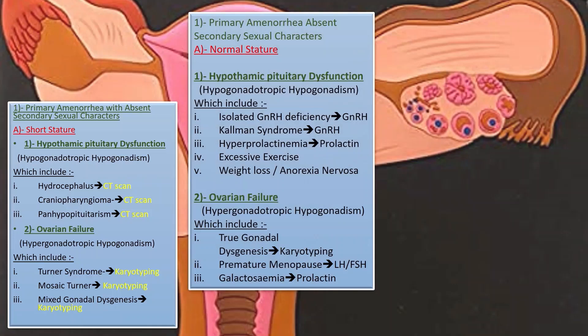For primary amenorrhea with absent secondary sexual characteristics and normal stature: isolated GnRH deficiency is diagnosed by GnRH levels; Kallmann syndrome by GnRH and LH/FSH levels; hyperprolactinemia by serum prolactin; excessive exercise, weight loss, and anorexia nervosa affect LH/FSH levels. For ovarian failure, karyotyping diagnoses true gonadal dysgenesis; LH/FSH levels help in premature menopause; prolactin level may be helpful in galactosemia.